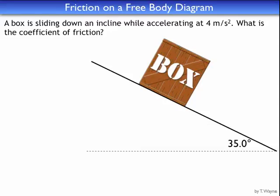In this practice problem, a box is sitting on an incline with friction, and the box is accelerating. The previous problem had the box moving at constant velocity, so this will be a good comparison. A box is sliding down an incline while accelerating at 4 meters per second squared. What is the coefficient of friction?